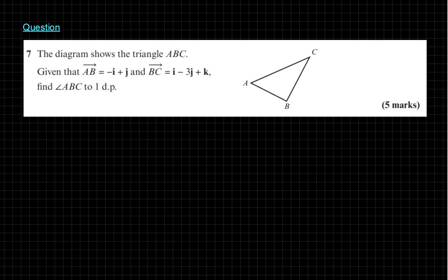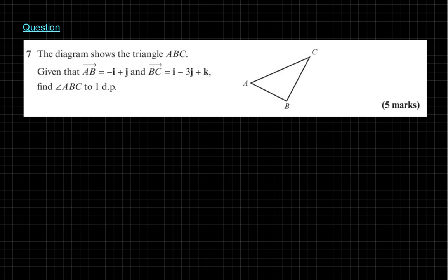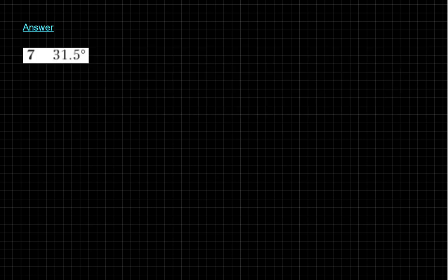Next question — pause now if you don't want a hint. You've been given two sides of a triangle in vector form, so you can find the missing side AC in vector form. Then find the magnitude of each side of the triangle, and use either the sine rule or cosine rule to find the required angle. The answer is 31.5 degrees.